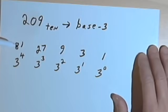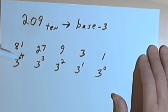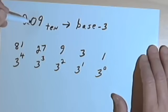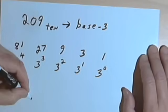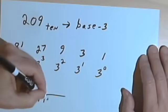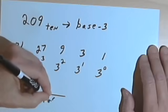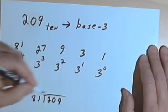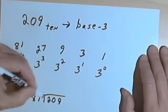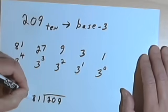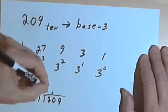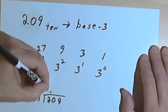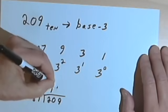Now I want to take 81, which is 3 to the 4th, and divide that into 209. 81 goes into 209 — looks like it should go in 2 times. 2 times 81 is 162.